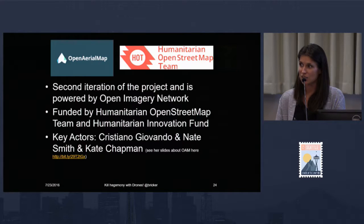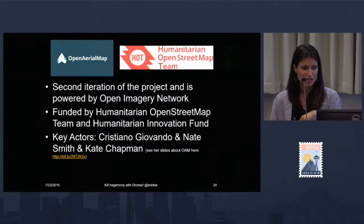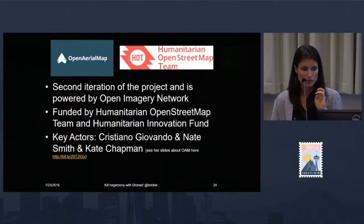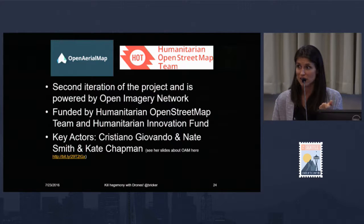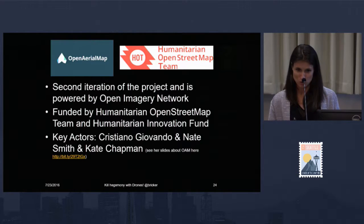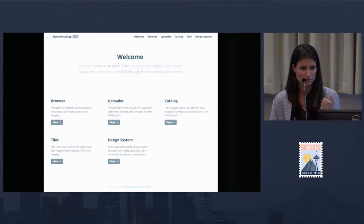This is actually the second iteration of Open Aerial Map. It started in about 2007, tapered off in 2008, and it's a project powered by the Open Imagery Network. I really think it's going to take off now because the technology has been shifting so quickly, more people have drones, and we see this need for more raster data — there's more of an opportunity to contribute raster data. I want to give a hat tip to some of the key contributors; I'm a user who's contributed imagery, but I'm in awe of the work that's been done here.